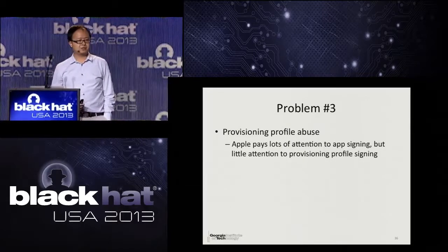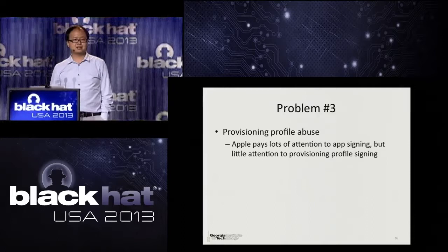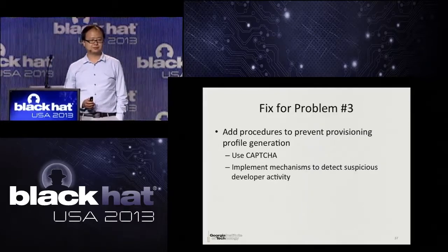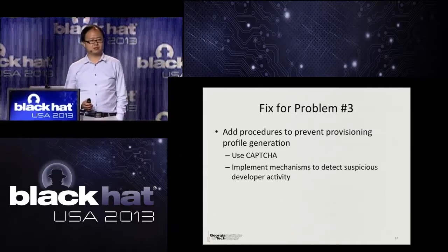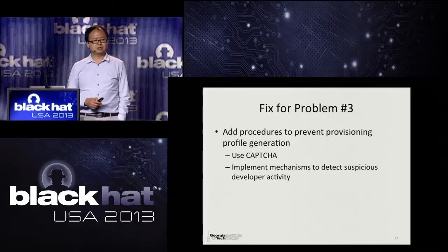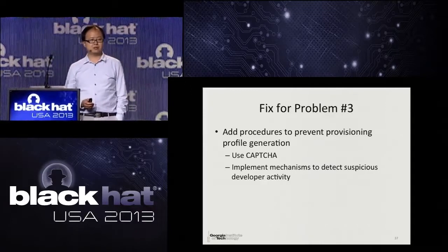Problem number three: provisioning profile abusing. While each app must go through a strict review process to get signed, the provisioning profile signing functionality is not well-guarded. For this reason, Mactans can automatically generate a provisioning profile for the target device on the fly. To fix this, we suggest adding additional procedures to stop this abusing — for example, a CAPTCHA can be added to stop automatic provisioning profile generation. Also, better anomaly detection mechanisms could detect suspicious behavior such as adding large amounts of UDIDs to a provisioning profile. Although this cannot prevent targeted attacks, it can help stop large-scale malware infection.